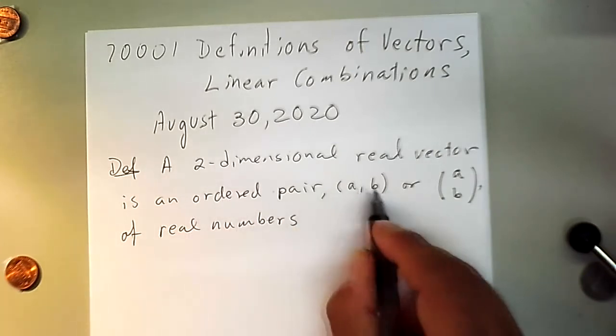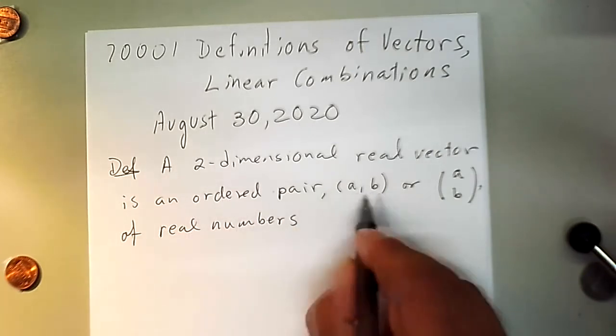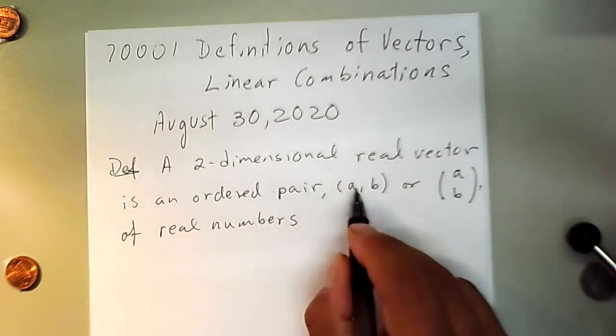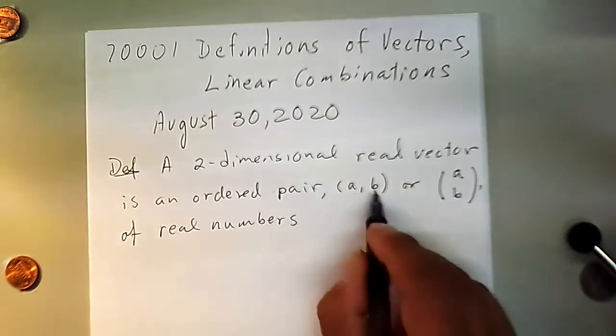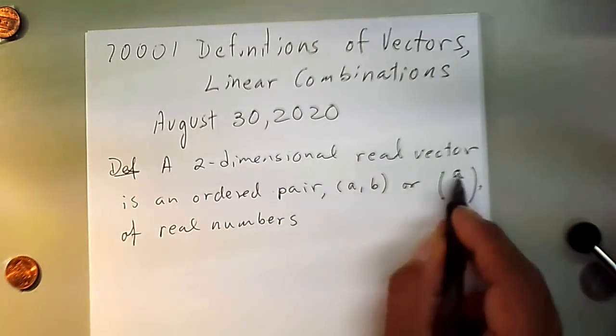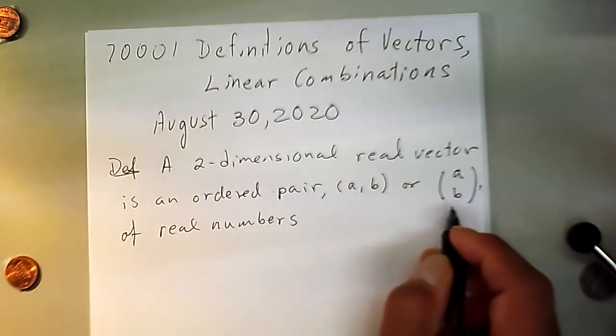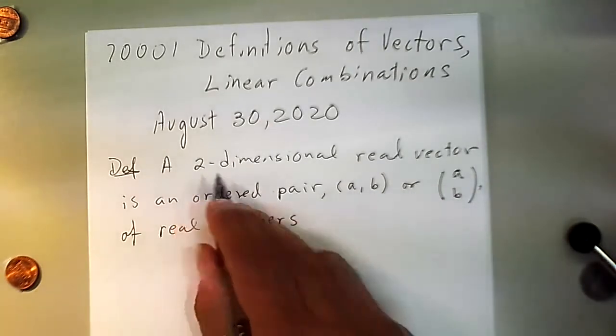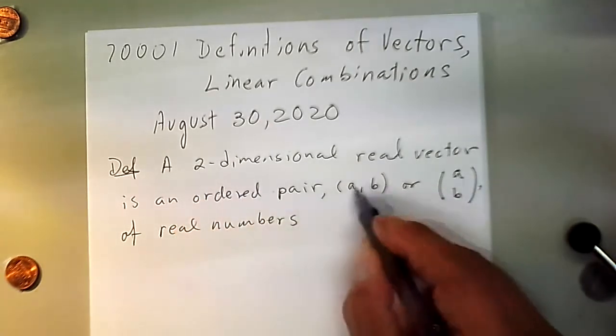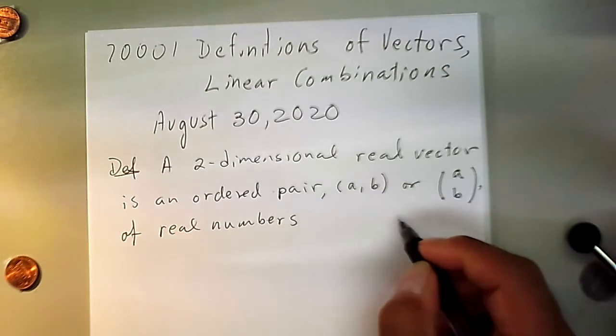Ordered means that we cannot switch them around — once the order is established, they have to stay in their position. Two-dimensional means that there are two of them.